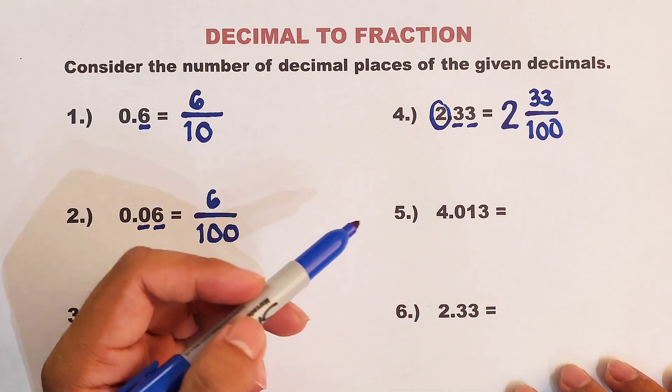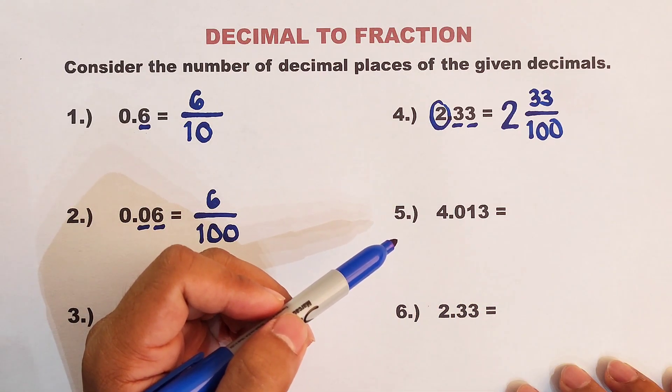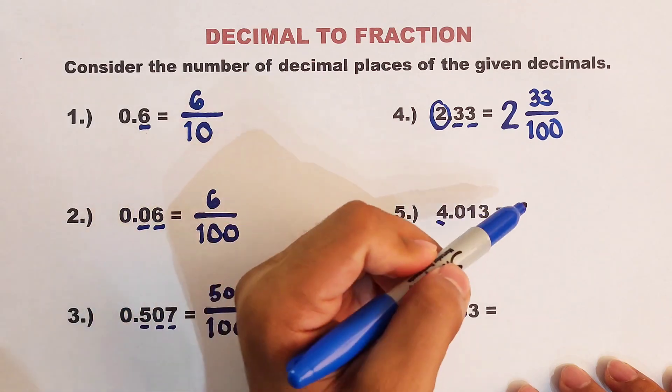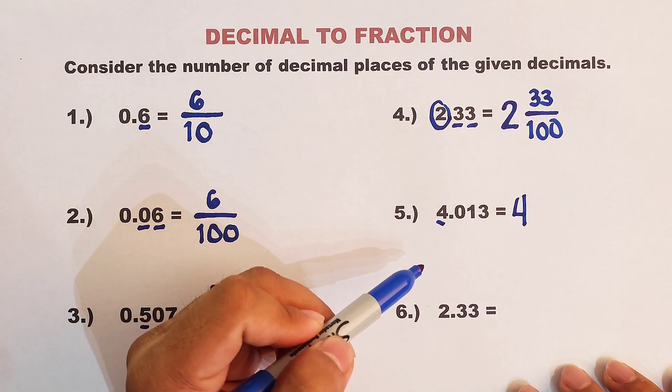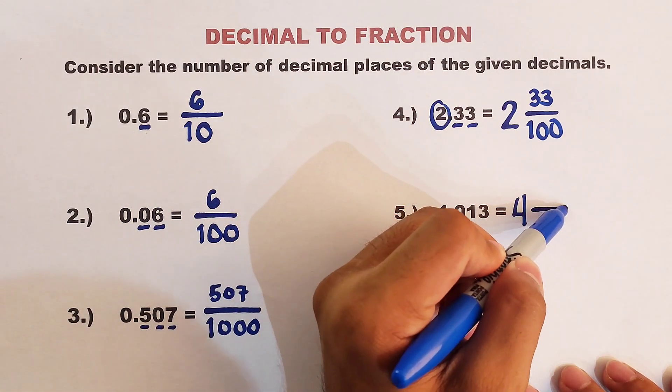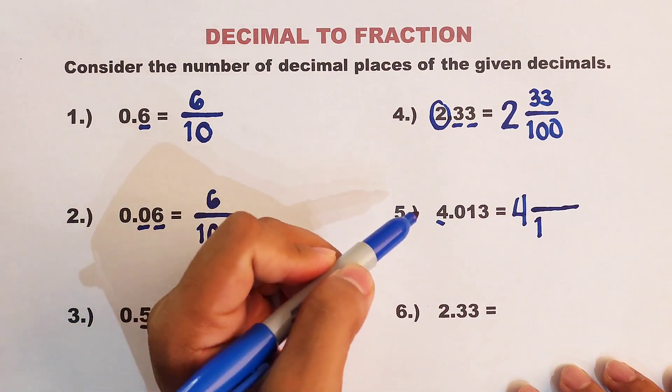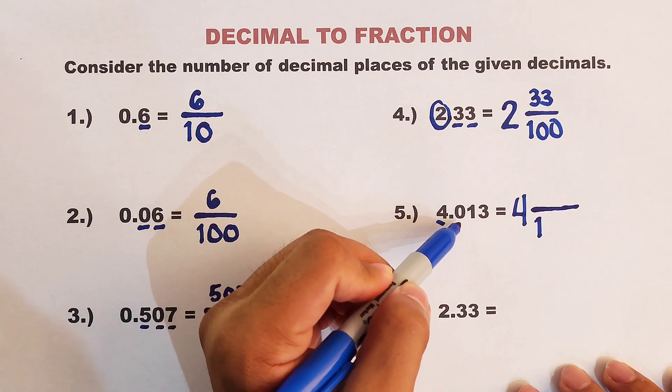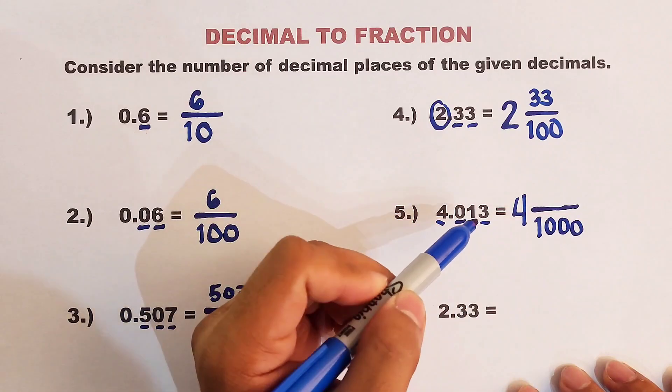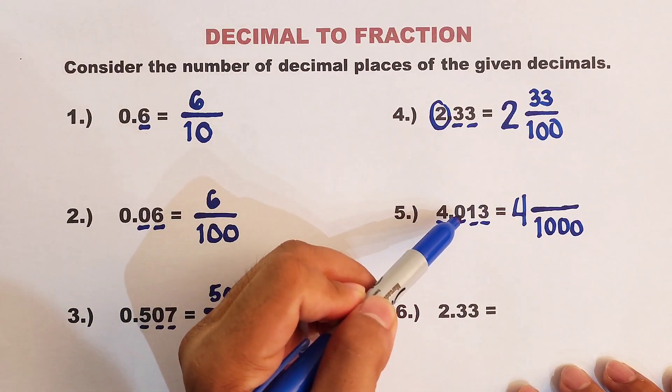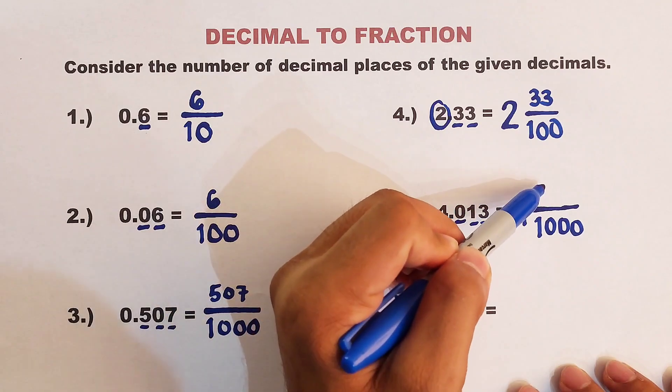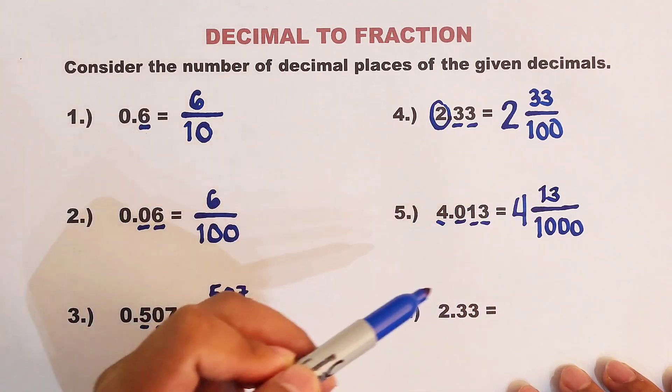Now guys, you can pause and answer number 5. Okay, let's continue. We have a whole number 4, so we will put that here. Then we put 1 in the denominator and count the decimal places: 1, 2, and 3, so we have 3 zeros. Now we copy the number. Instead of 013, you can simply write 13. And this is the answer.